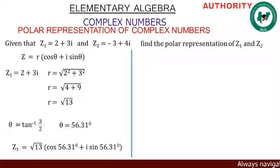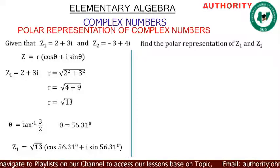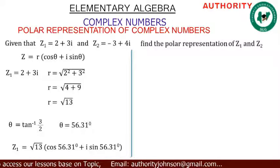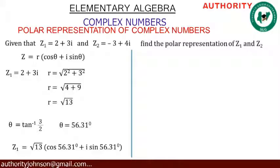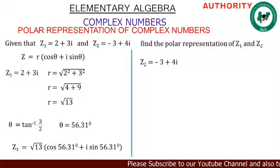Now let's represent z₁ properly. We have z₁ equals r(cos θ + i·sin θ), and replacing r = √13 and θ = 56.31°, we get z₁ = √13 (cos 56.31° + i·sin 56.31°).